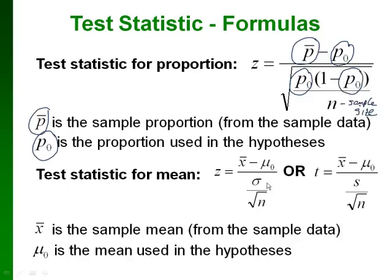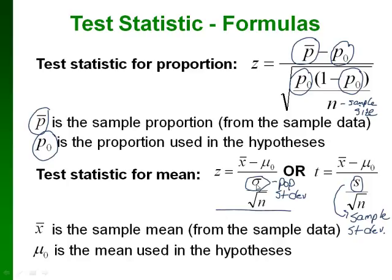If we're testing something about a mean, we have a choice of two formulas. The difference between them is that one has sigma — the population standard deviation — and the other has s — the sample standard deviation. Use the first formula when you have a value for the population standard deviation. Use the second formula when you only have data from your sample. In both formulas, x-bar is the sample mean and mu₀ is the value from the hypotheses.